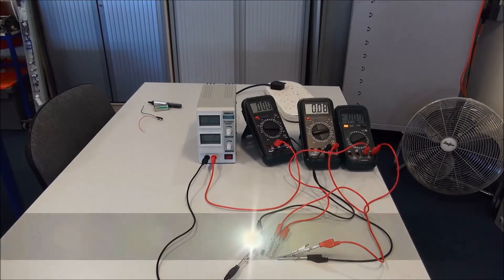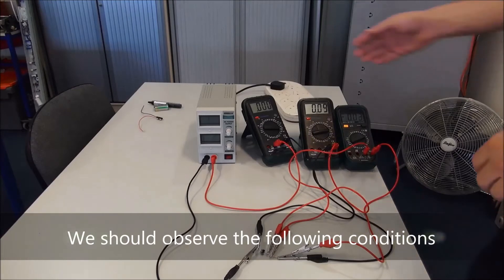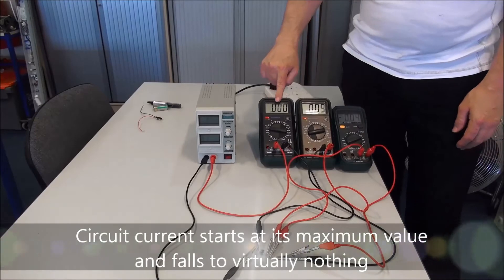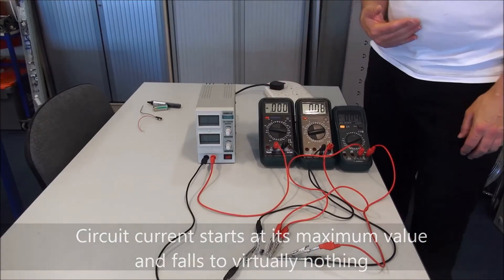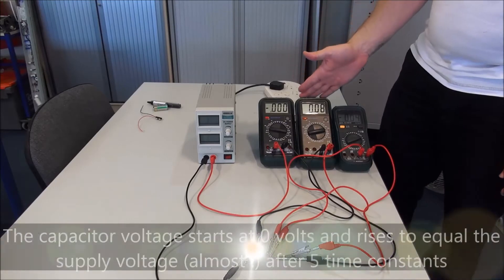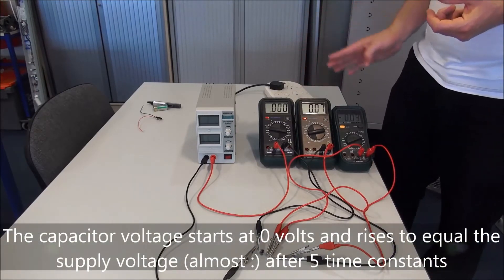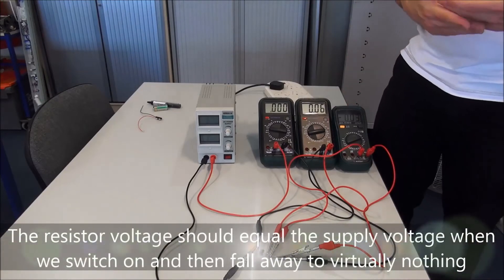So, for the experiment itself, we've got everything set up. What I want you to do is I want you to look at the current. And we should see the current starts out at a fairly high value and falls away to nothing. We've got the voltage across the capacitor, which should grow as time goes on. And we've got the voltage across the resistor, which should fall as time goes on.